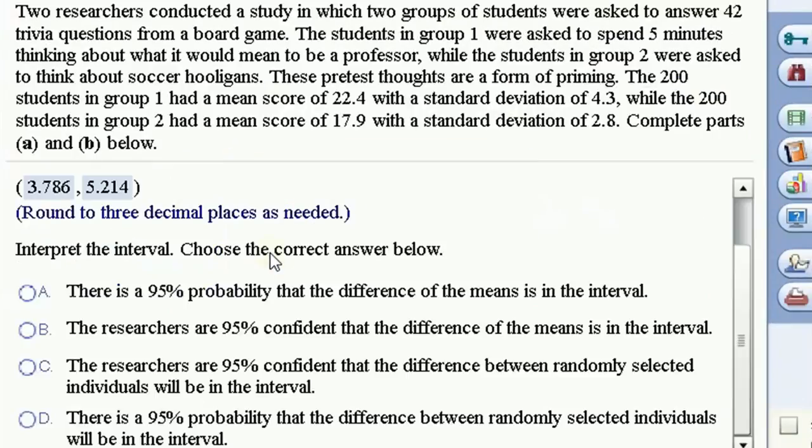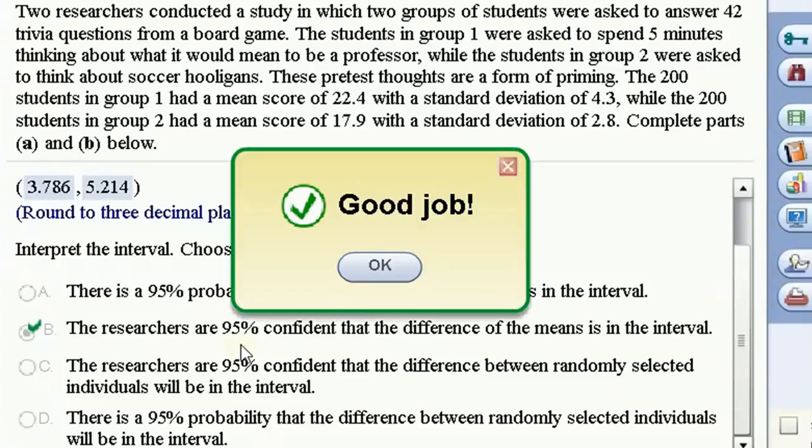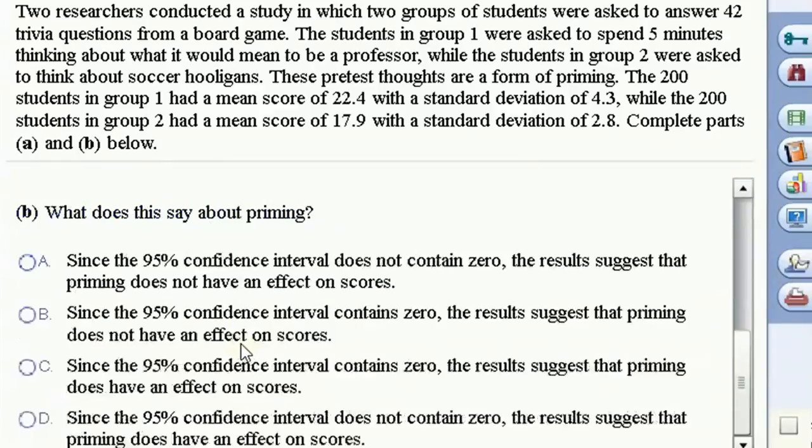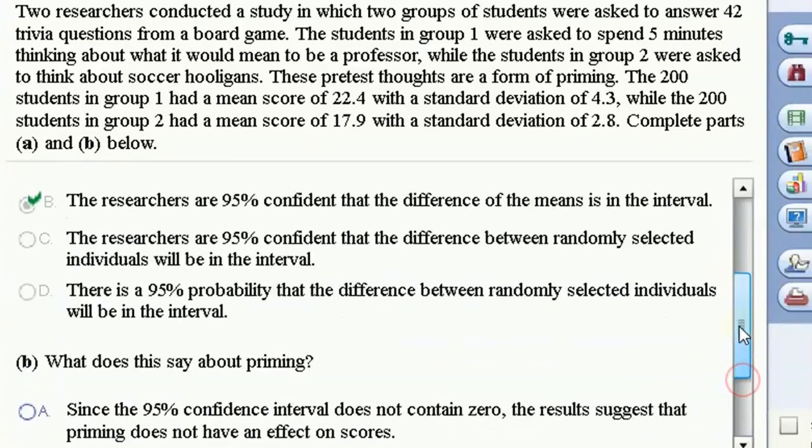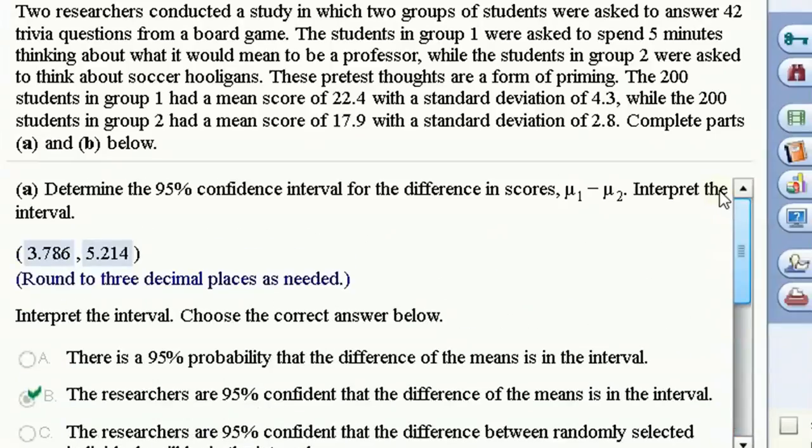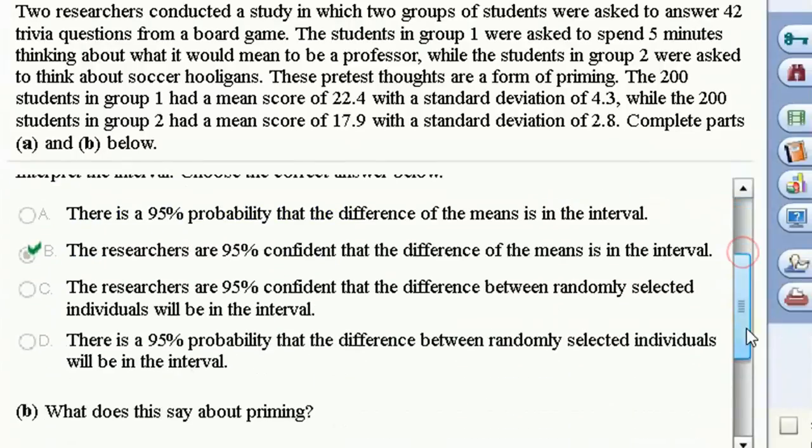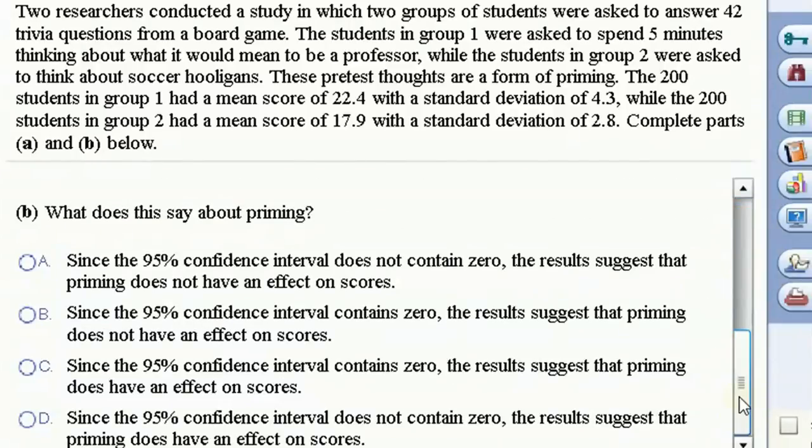We've got from 3.786 to 5.213. I'm rounding that up to 214 to get three decimal places. So we would say that we can be 95% confident the difference of means is in the interval. That's how we interpret a confidence interval. Since we're doing an estimate on the difference of means, that's what we're confident about. Now, what does it say about priming? Since we're 95% confident that the difference is between 3.7 and 5.21, that's another way of saying we're 95% confident that mu1 is greater than mu2. And if mu1 is greater than mu2, that suggests that priming works.